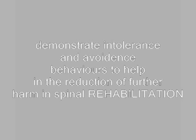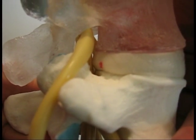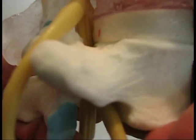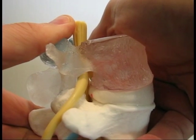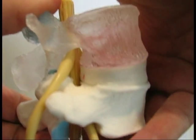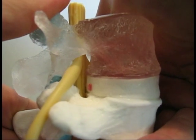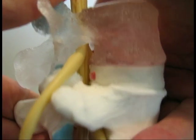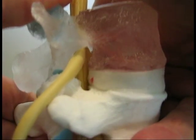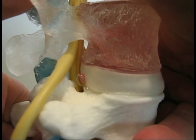Importantly, getting patients to understand intolerances will be helpful for rehabilitation purposes. With this more realistic spinal disc model, demonstrate how neutral loading does not cause as much posterior migration of the nucleus, but under flexion loading, migration occurs.